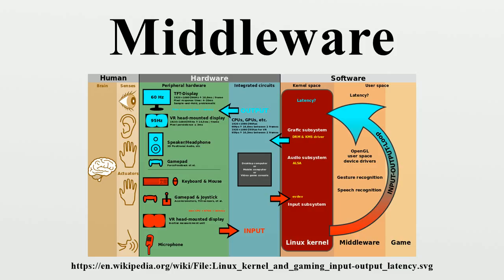The Android operating system uses the Linux kernel at its core, and also provides an application framework that developers incorporate into their applications. Android provides a middleware layer including libraries that provide services such as data storage, screen display, multimedia, and web browsing. Because the middleware libraries are compiled to machine language, services execute quickly. Middleware libraries also implement device-specific functions, so applications and the application framework need not concern themselves with variations between various Android devices.